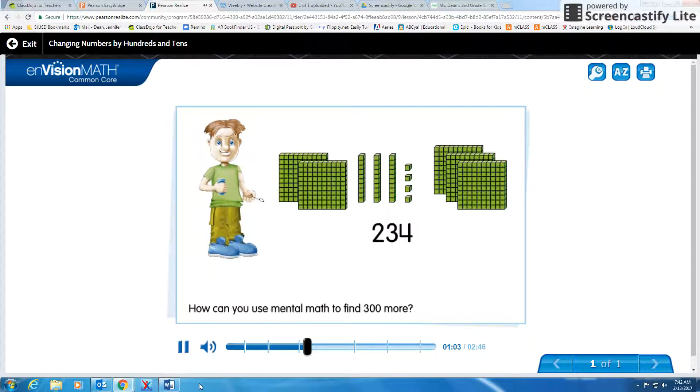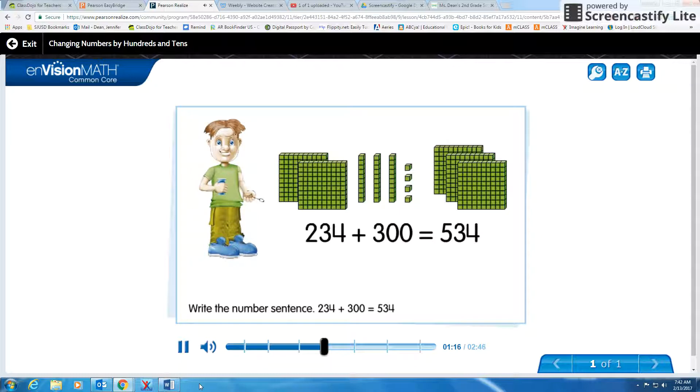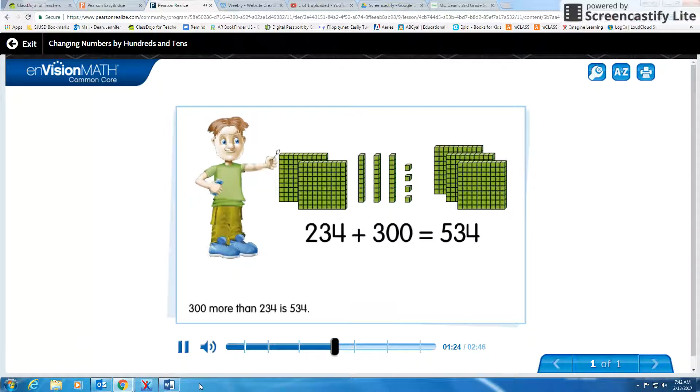How can you use mental math to find 300 more? You can count on by hundreds starting at 234. Write the number sentence. 234 plus 300 equals 534. 300 more than 234 is 534.